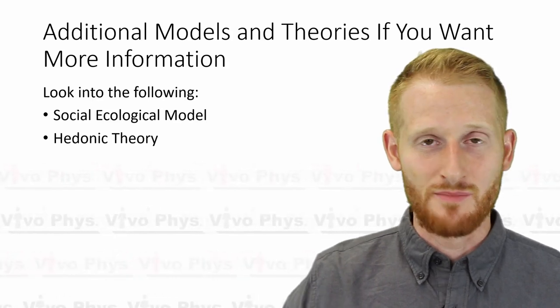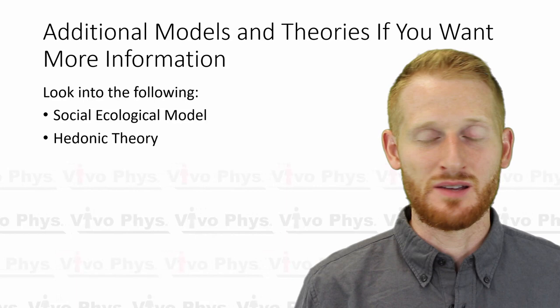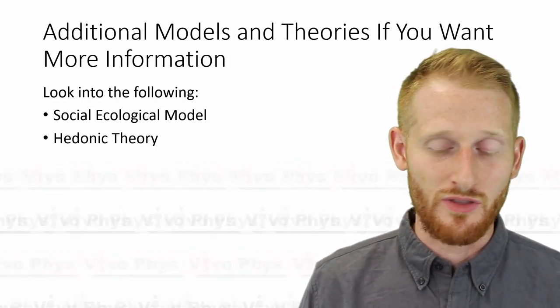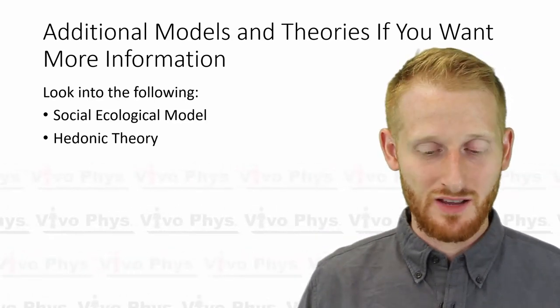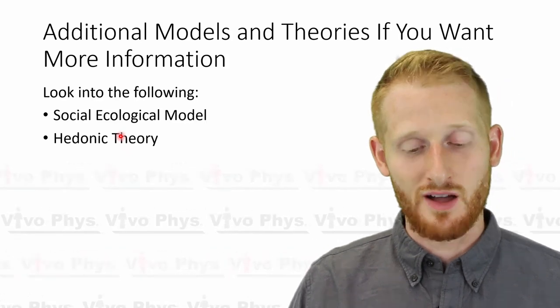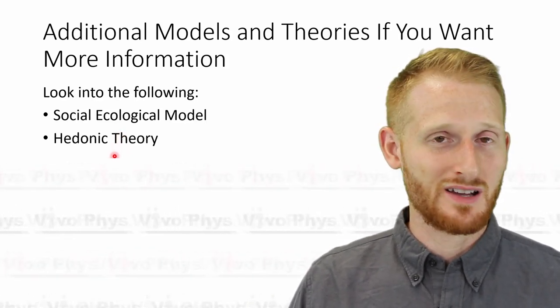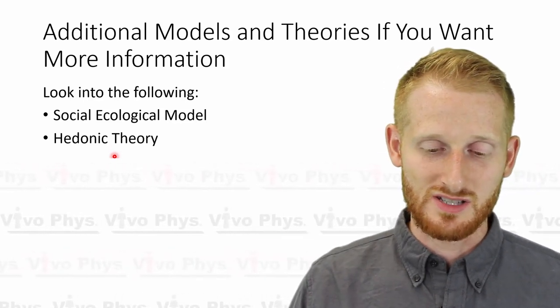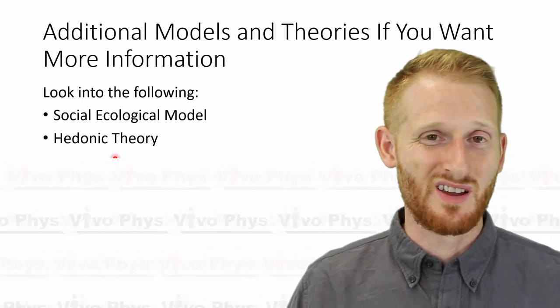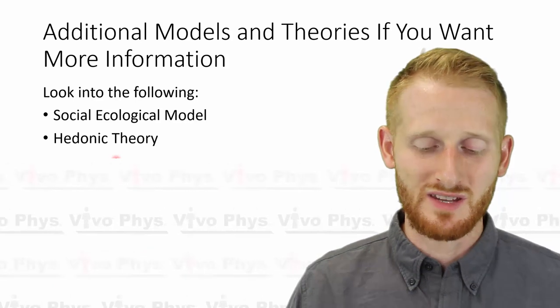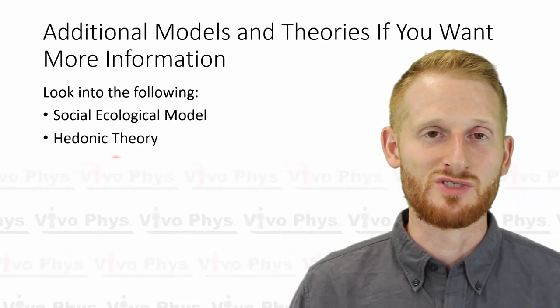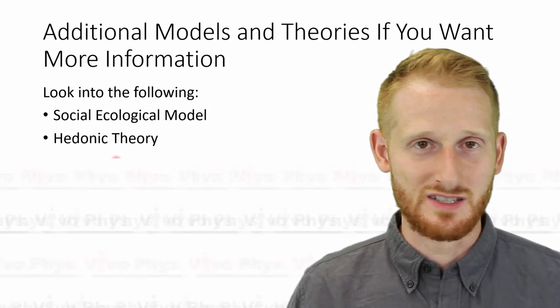There are a lot of different theories and models out there about behavioral change. We hit on the big ones the ACSM focuses on, which you'll almost certainly see on a certification exam. A couple others you might see occasionally are the social ecological model and the hedonic theory — those are in your textbooks. The ones covered here are the big ones you'll use most and need for your certification exams. Hopefully that was a nice overview of behavioral change theories and models. If you have questions, put them in the comments below and please come back to watch another video.